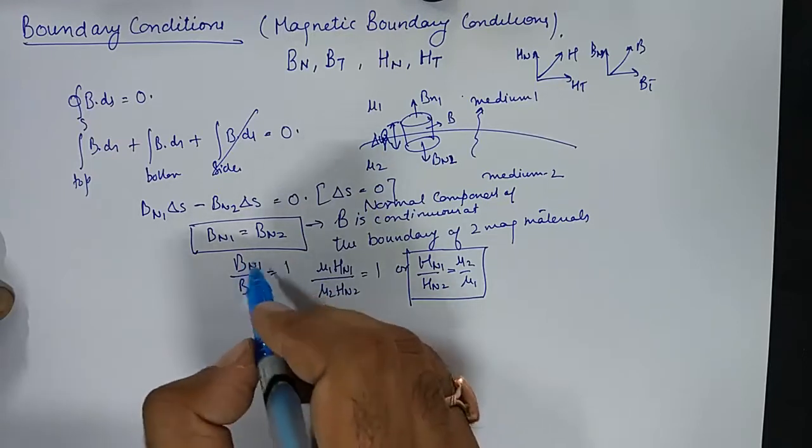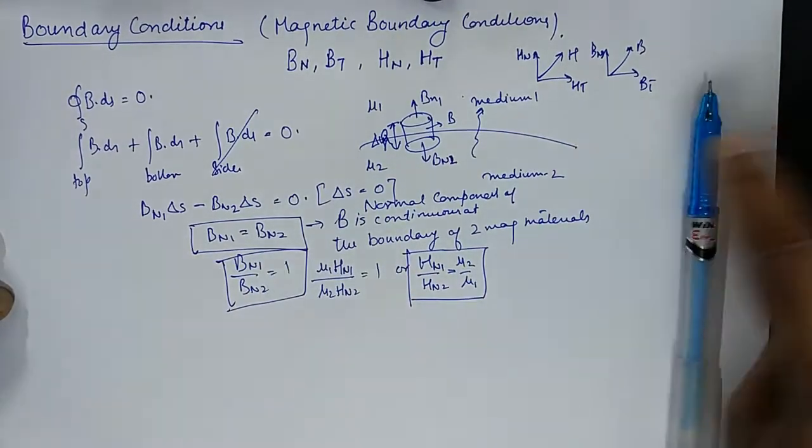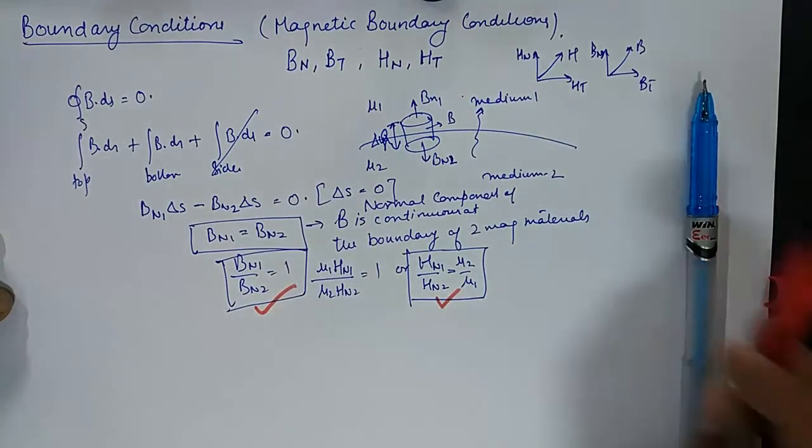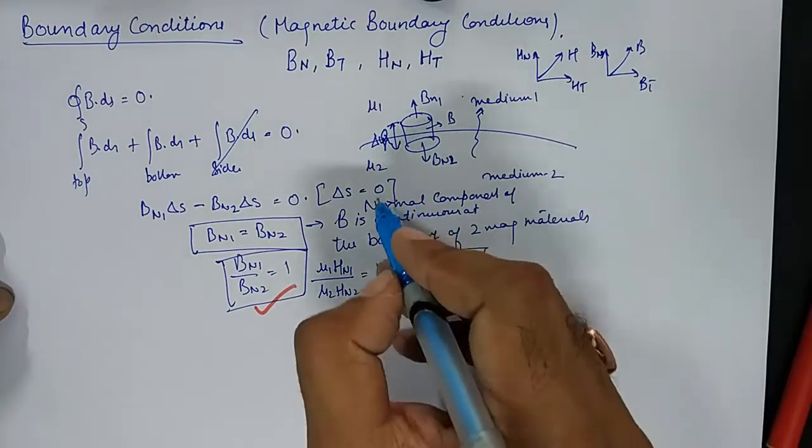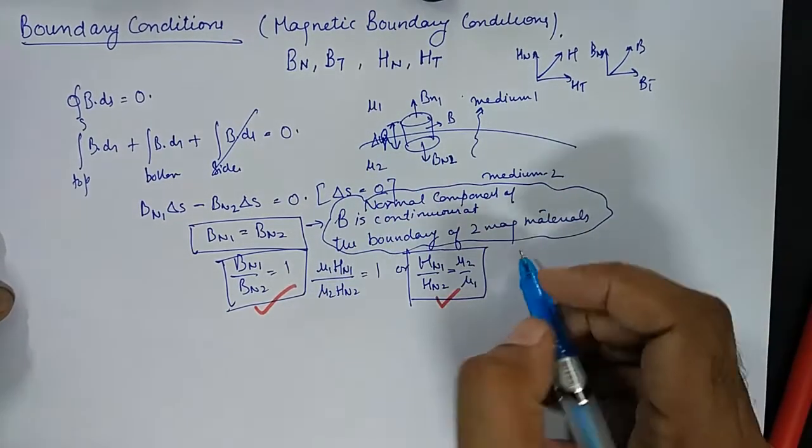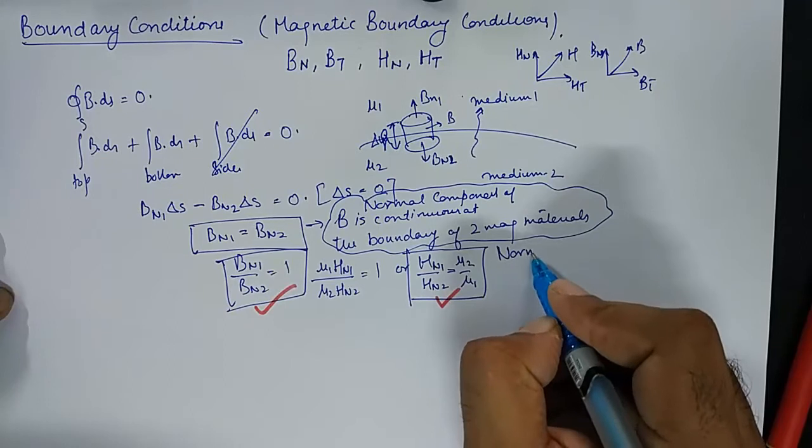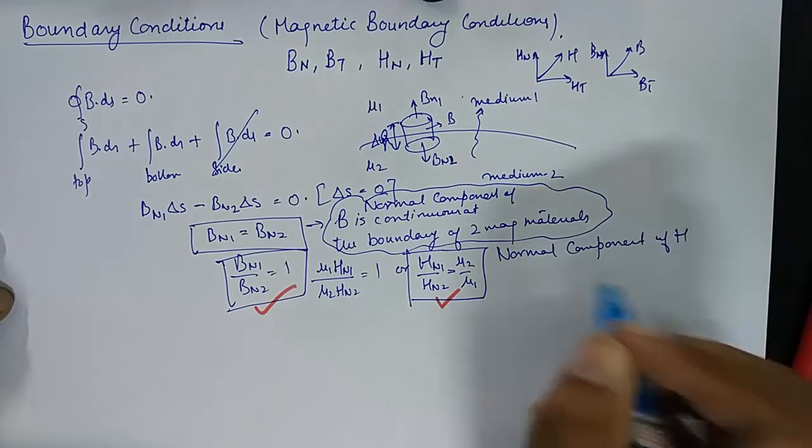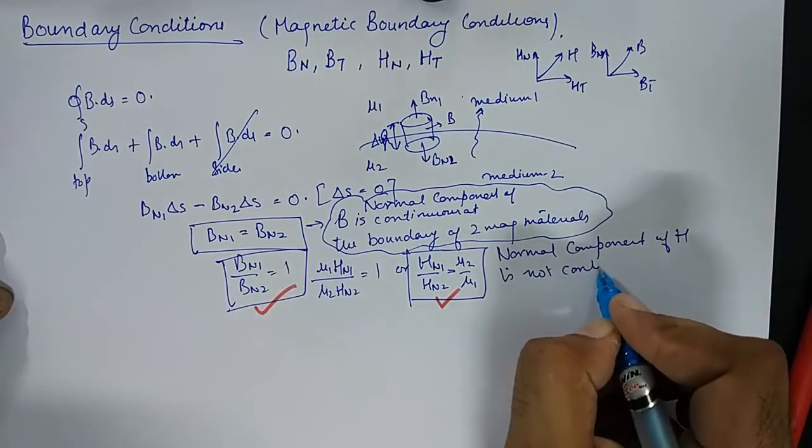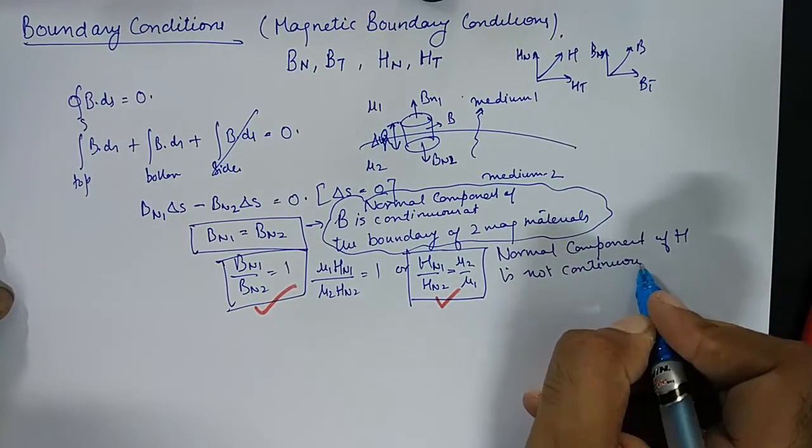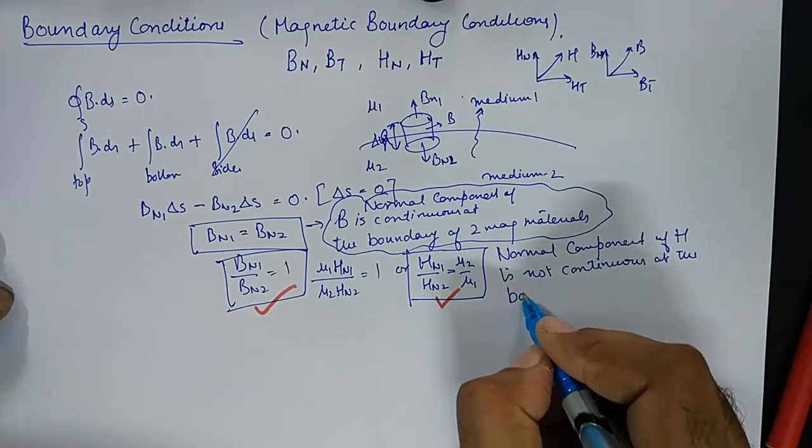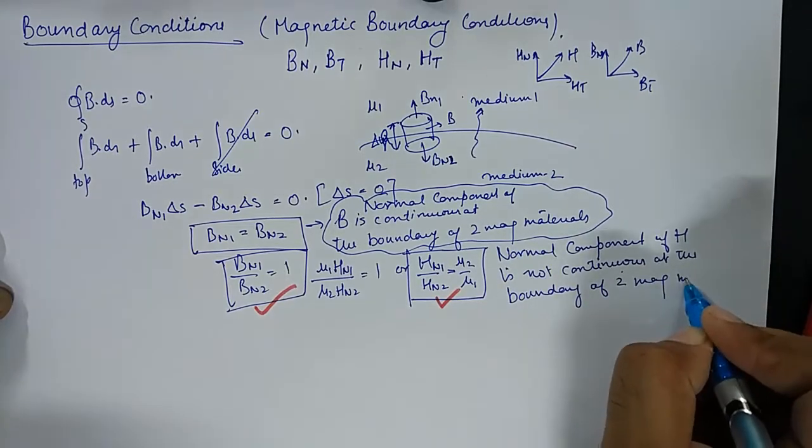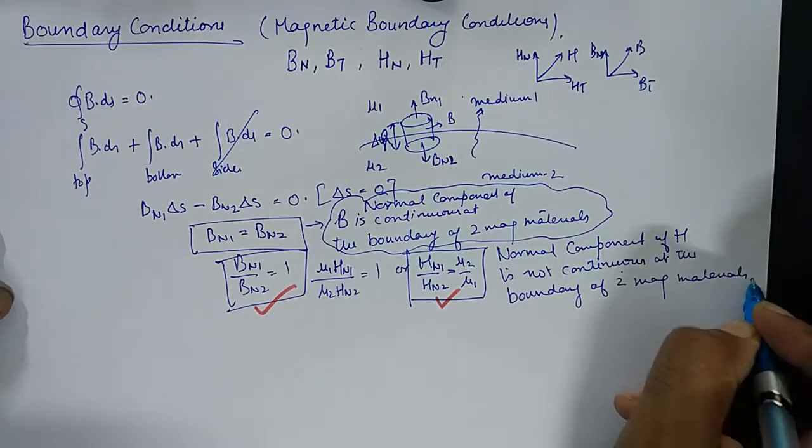So this is result number 1. This is result number 2. This was the statement for result number 1. We will say normal component of H is not continuous at the boundary of two magnetic materials. Simple.